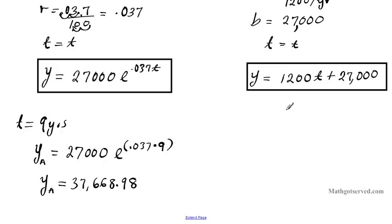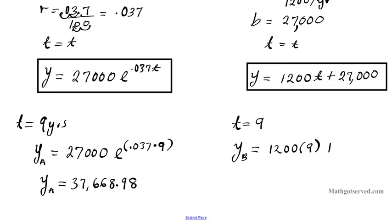Now let's take a look at the linear model with t equal to 9 years. How much are we going to get after nine years if you've been paid $300 every quarter — or $1,200 a year? So account B equals 1200 times 9 plus 27,000. Plugging that into the calculator, for account B you're going to get $37,800.